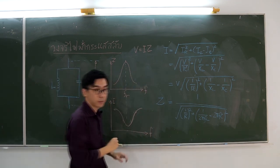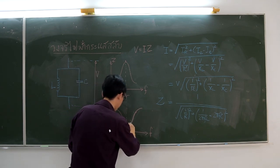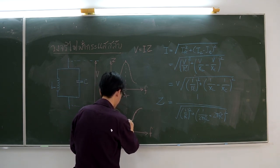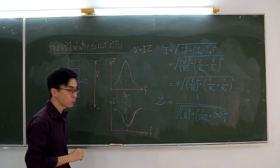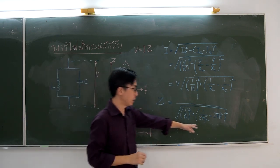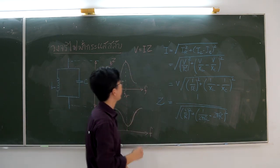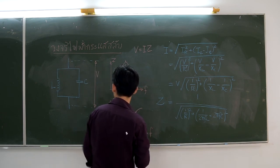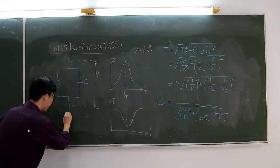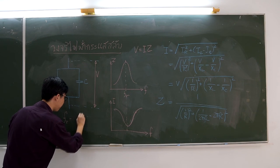The condition for the resonant frequency here is the same as in the RLC series circuit, which is FR equal to 1 over 2π times the square root of L times C.